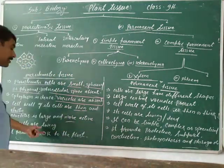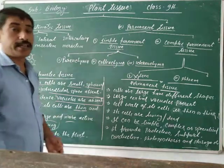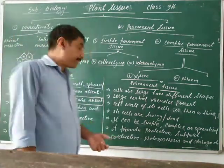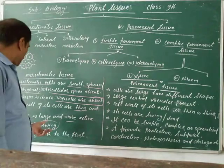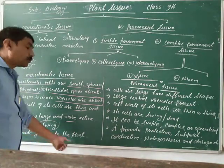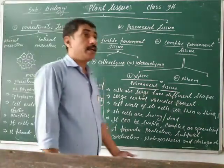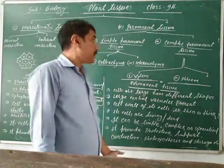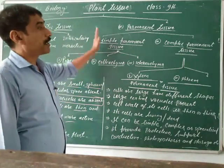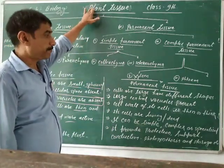The meristematic cells are living. They contain a large living vacuole inside and provide growth to the plant. These are the characteristics of meristematic cells.